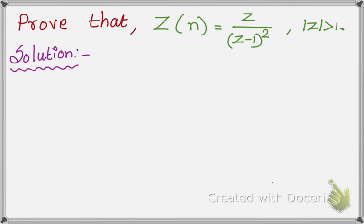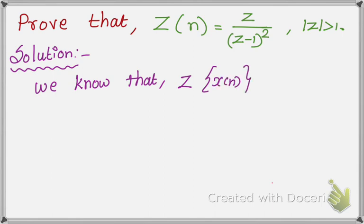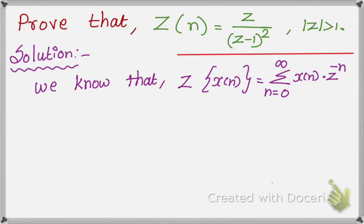First, before we start the solution, we recall the definition of Z-transform. The definition is: Z of x(n) is equal to summation from n equal to 0 to infinity of x(n) times Z to the power of minus n. This is the formula — you should memorize this. This is the formula for Z-transform.